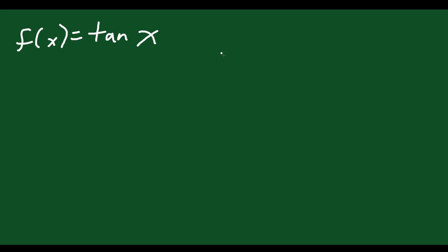Part of the reason for that is if you think about what tan represents — if I draw my plane here, and you have a line that's just horizontal, tan of that is your opposite over adjacent, y divided by your x, which is just going to be zero. Another way to think about that is a line with a slope of zero. If you have a line at 45 degrees, the slope of that line is one.